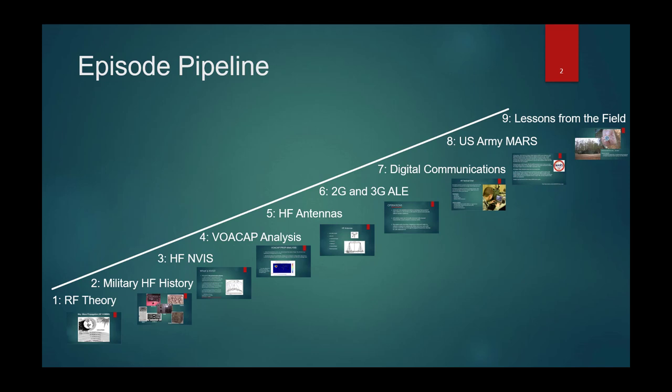Then the fifth episode will be on HF antennas. We're going to talk about everything from dipole antennas, vertical whip antennas, the best way to orient them to help with NVIS propagation, and also for communicating long distances past 500 miles.